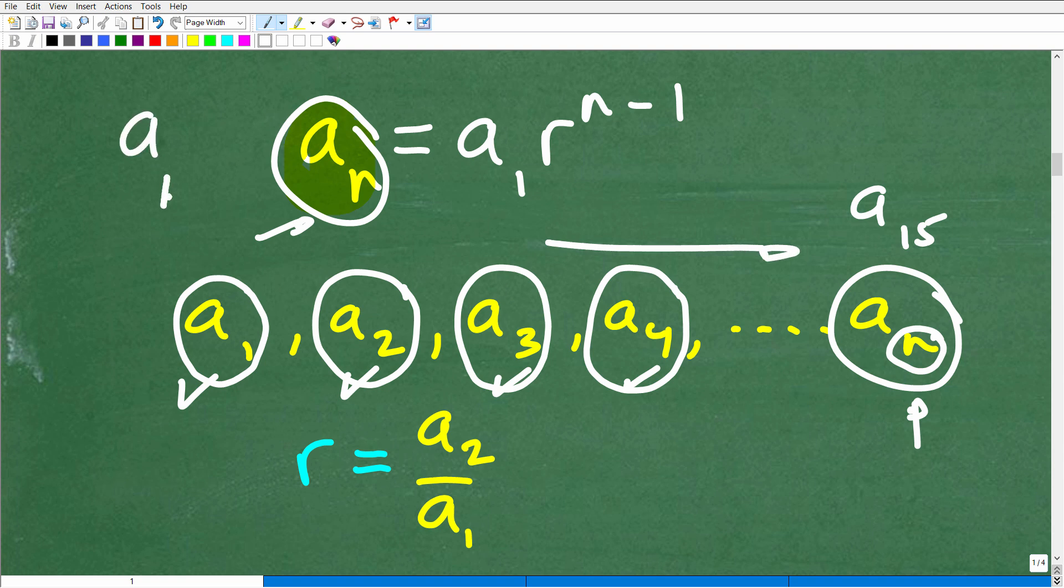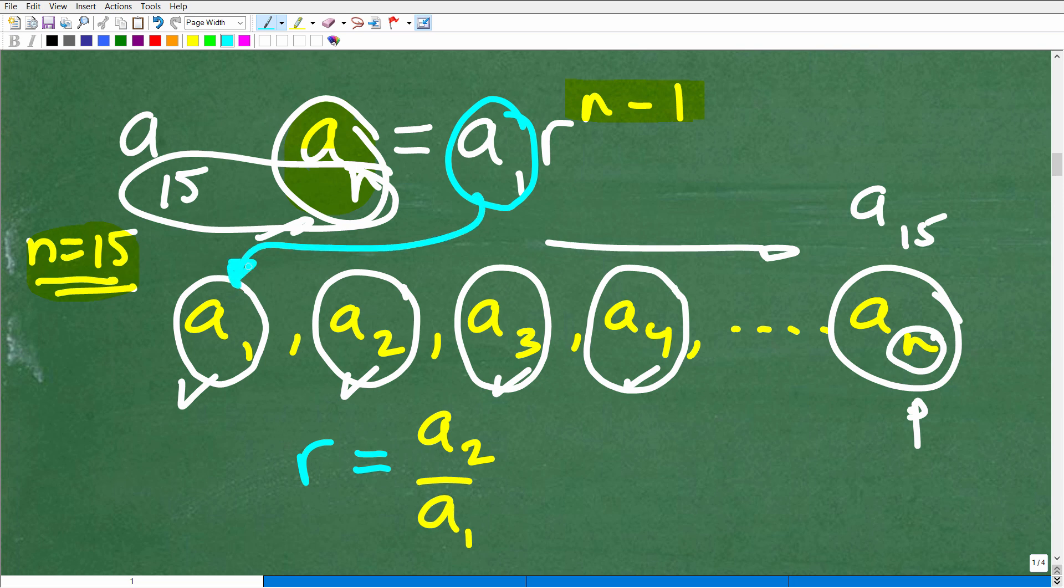We want to find a sub 15, so n would be equal to 15. We're going to need that in this part of the formula, n minus 1. Our n value for this particular problem is 15. What about a sub 1? a sub 1 is the first term of the geometric sequence. We do have that, it's 2. So we have n equals 15 because we want the 15th term.